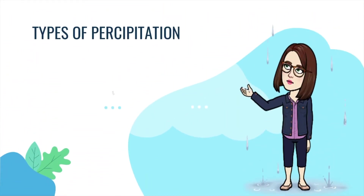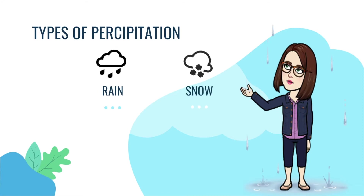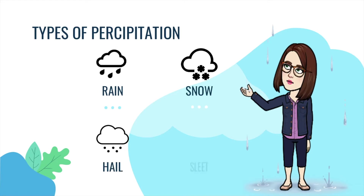There are several different types of precipitation: rain, snow, hail, and sleet.